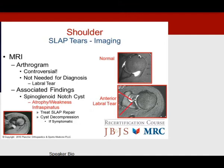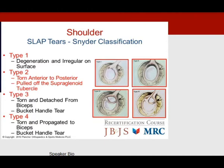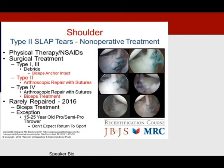MRI with arthrogram may be helpful. Identifying associated spinoglenoid notch cysts is important — look for posterior atrophy, treat the SLAP tear if present, and consider cyst decompression if symptomatic. Dr. Snyder classified SLAP tears types 1 through 4 and beyond; we focus on type 2, the anterior-to-posterior tear pulled off the supraglenoid tubercle. Non-operative treatment with physical therapy and NSAIDs is preferred; surgical repair with arthroscopic sutures is an option, but in 2016 we believe the biceps needs treatment more often than the labral tear, and repair in the 15–25-year-old thrower often does not restore original sport level.